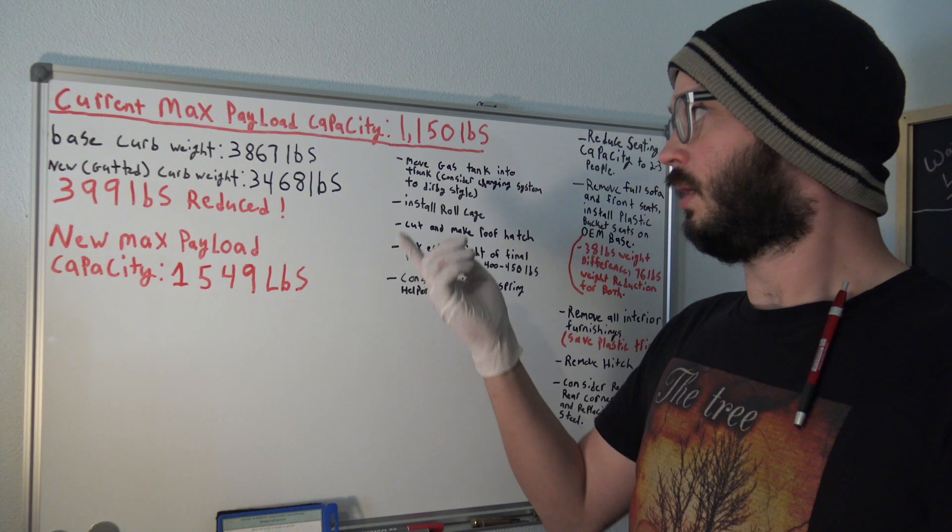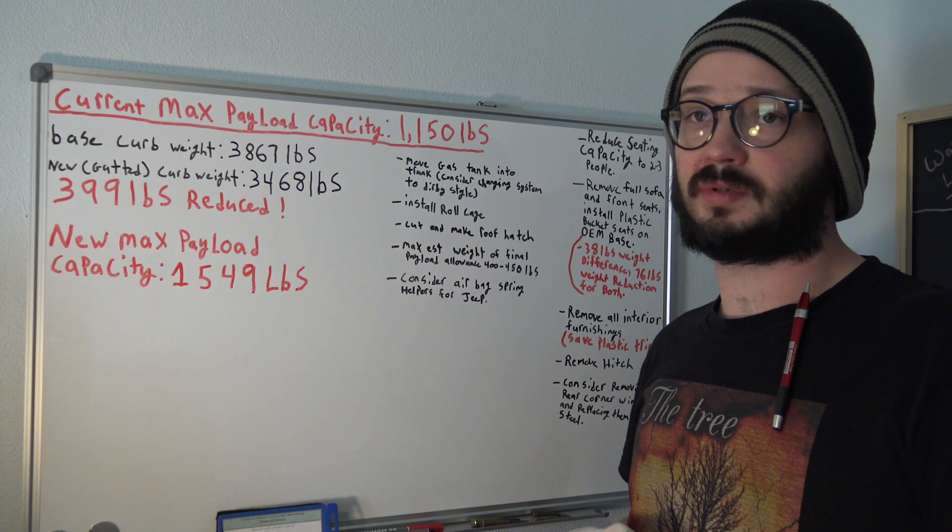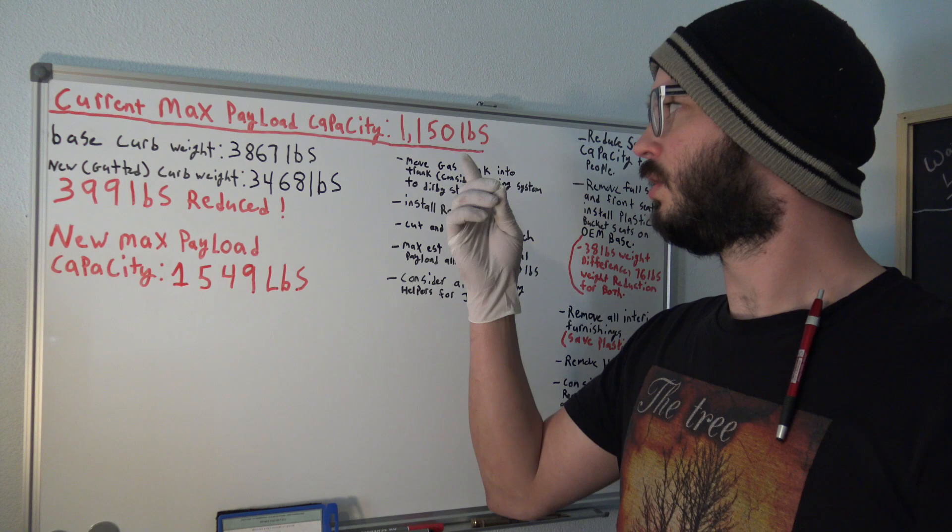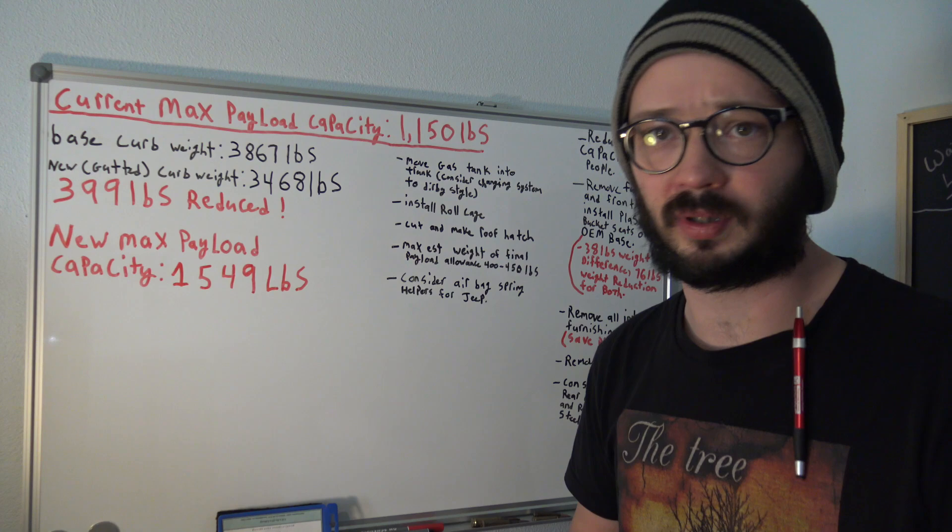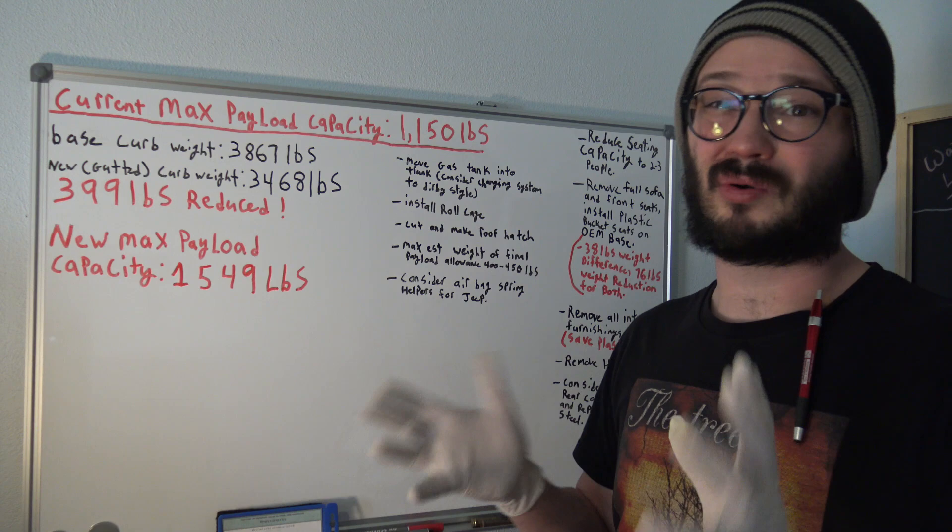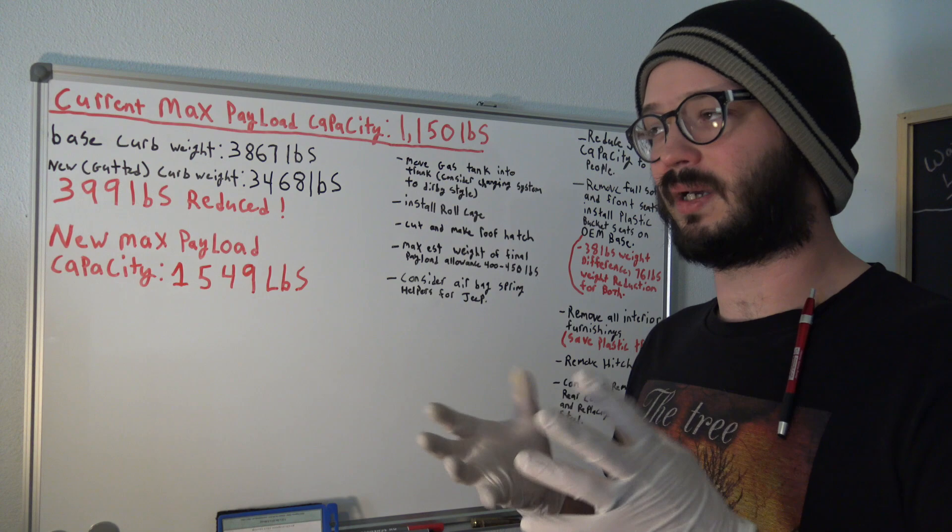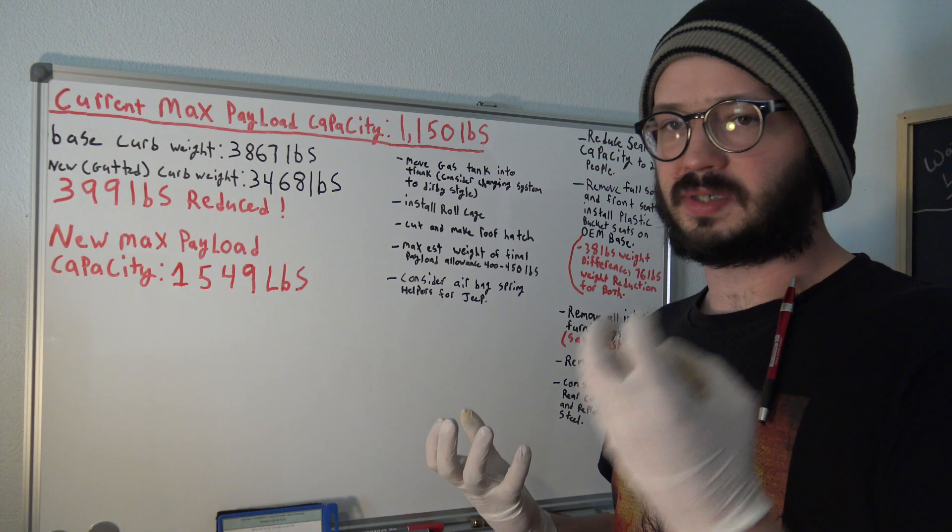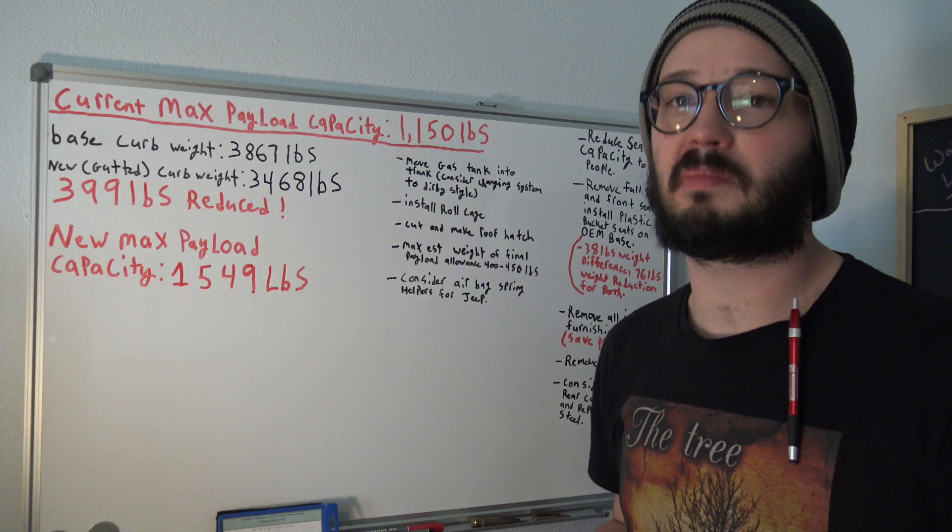This number is pretty low. It's set at 1,150 pounds. And there's not a lot of ways to increase payload capacity, sadly. Even if you change out the suspension, there's no real way to increase that number without doing major modifications to a vehicle, like removing axles and doing a whole lot of stuff. And even then, it's not crash tested. The difficulty comes to the point where it's essentially easier just to buy a vehicle with a higher payload capacity. Like it's just going to be easier and cheaper.